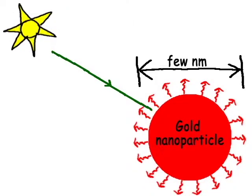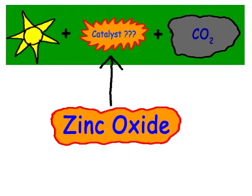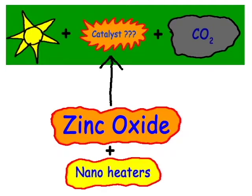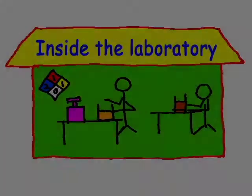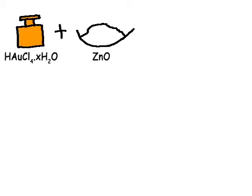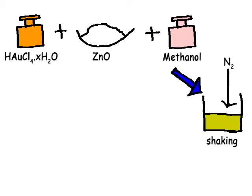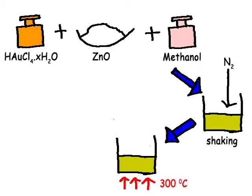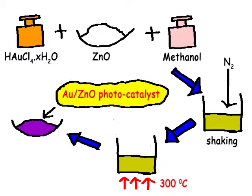The dancing frequency of our nano-heaters is the same as the frequency of green light. Therefore, our nano-heaters can absorb only green light. After the green light absorption, gold nanoparticles generate highly localized heat in the vicinity of a few nanometers. As a result, our catalyst is zinc oxide with nano-heaters. Inside the laboratory, we synthesized gold zinc oxide photocatalysts using a small number of chemicals and a simple method.